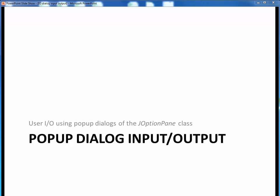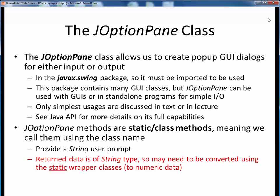In this video lecture, we want to demonstrate how to obtain user input and output using GUI pop-up dialogs of the JOptionPane class. So far, we've seen how to get user input at the command line using the Scanner class and how to display user output to the screen using the standard print methods. But sometimes it's good to have more familiar and nicer looking GUI input-output capability. To do this, we can use the JOptionPane class to create pop-up GUI dialogs for either input or output.